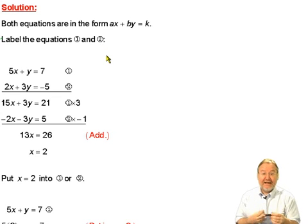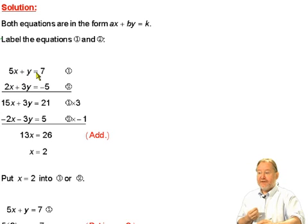Some people label them A and B. It makes no difference just to distinguish the two equations. So 5x plus y equals 7, we'll label equation 1. And 2x plus 3y equals minus 5, we'll label equation 2.